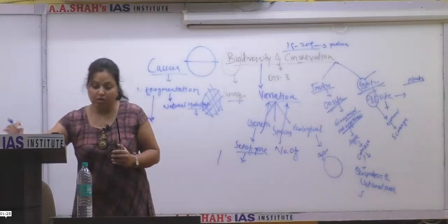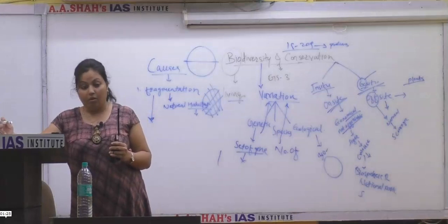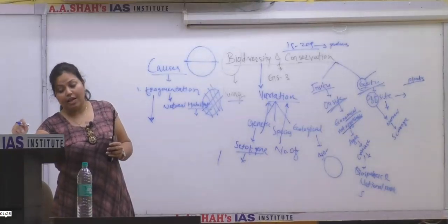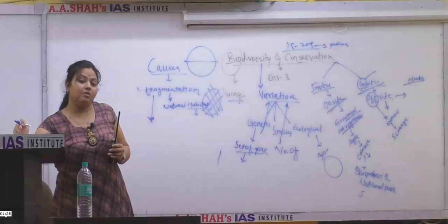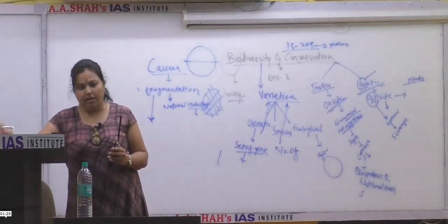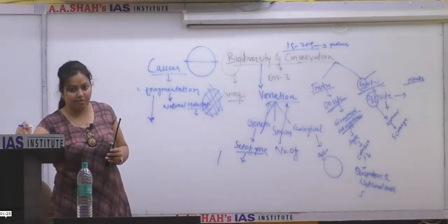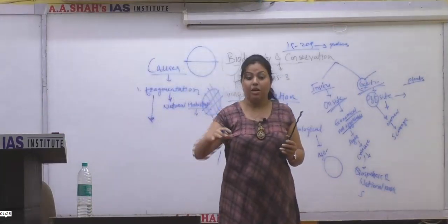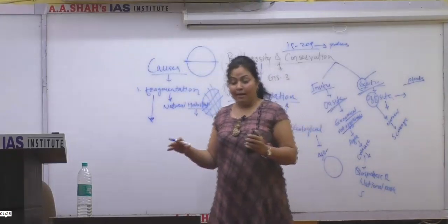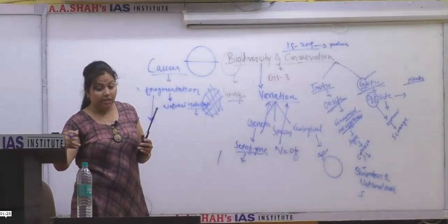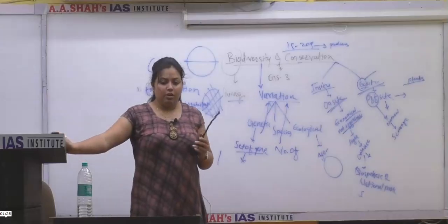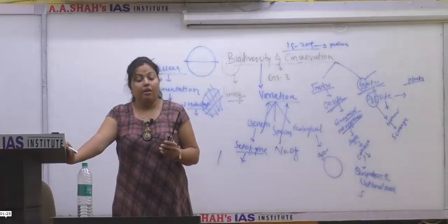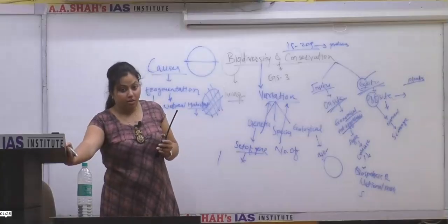We saw conservation — two types: on-site (in situ) and off-site (ex situ). In situ includes national parks, biosphere reserves, and sanctuaries. Ex situ includes botanical gardens and zoological parks. In situ is more expensive for the government since they conserve the whole forest area with no human activity — creating a dilemma between biodiversity preservation and development, mining, or projects in forest areas.